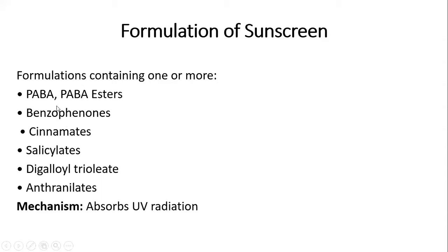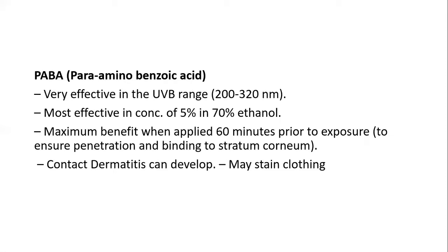The formulation of sunscreen contains these active agents — it may have one or more. The agents used include: PABA, PABA esters, benzophenones, cinnamates, salicylates, digalloyl triolate, and anthranylates. The basic mechanism for all these ingredients is that they absorb UV radiation. PABA (para-aminobenzoic acid) is very effective in the UVB range of 290 to 320 nanometers, most effective at a concentration of 5% in 70% ethanol, with maximum benefit when applied 60 minutes prior to sun exposure.